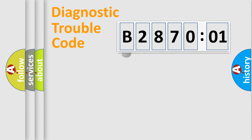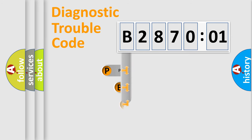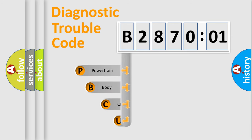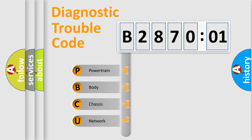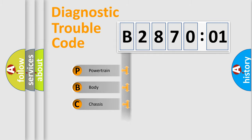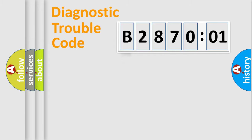First, let's look at the history of diagnostic fault code composition according to the OBD2 protocol, which is unified for all automakers since 2000. We divide the electric system of an automobile into four basic units: Powertrain, Body, Chassis, and Network.